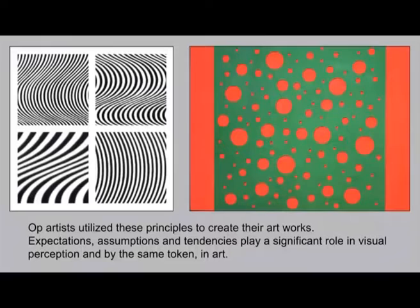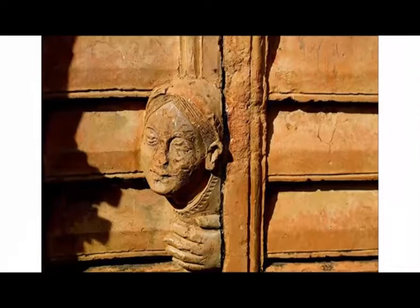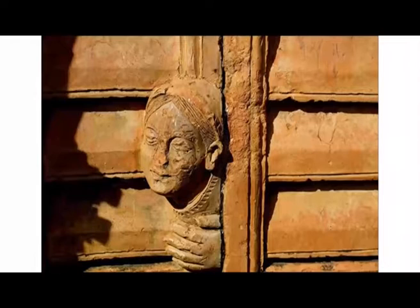Artists in the west, in the context of modern western art, utilized these principles to create their artworks. Expectations, assumptions, and tendencies play a very significant role in visual perception and by the same token in art. When you look at the close-up of a terracotta relief panel from a terracotta temple in Bengal — how do we know these are window shutters through which a figure or head is peeping out? Because you connect these forms, lines, and elements with what you know. Visual perception is not just about what you are receiving at that moment; it is also about what you have already received in the past and has to do with your knowledge and memory.